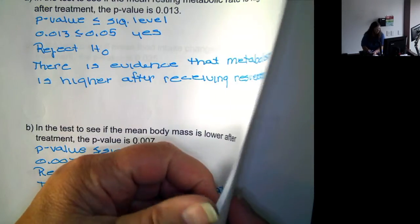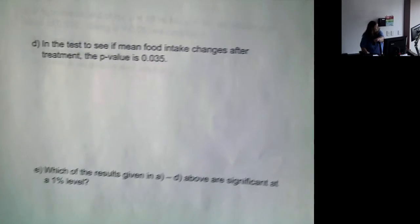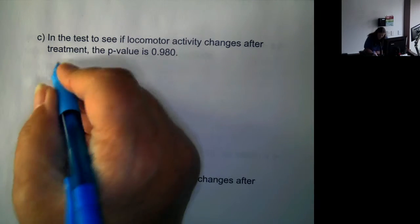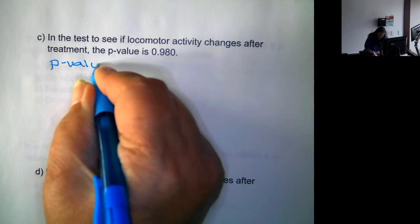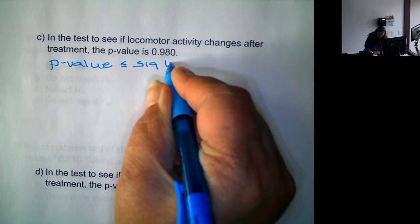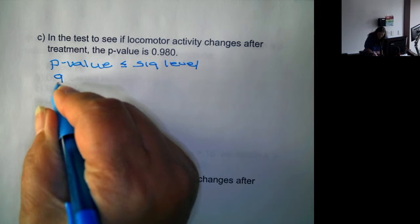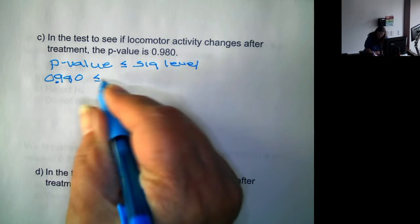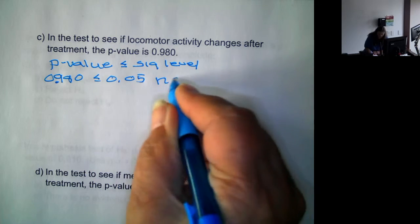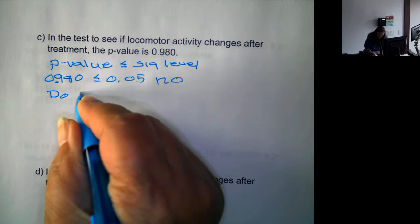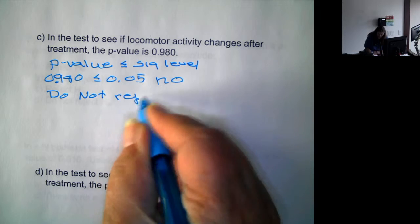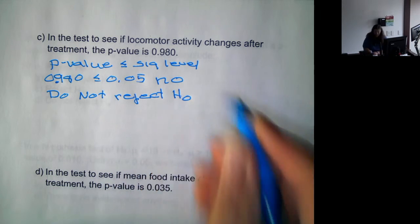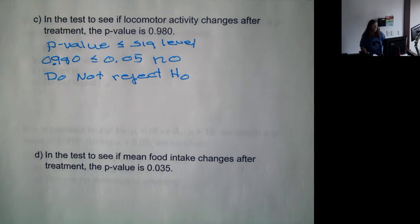Now we have a test to see if locomotor activity changes after treatment. So again, is the p-value less than or equal to the significance level? So is 0.980 less than or equal to 0.05? No. So we do not reject H₀. And you have to state it as do not reject. We never accept the null hypothesis. We just say that there is not enough evidence to cause us to reject it.